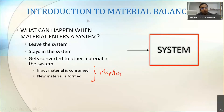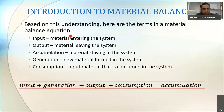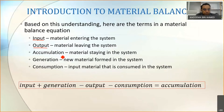For now we are not talking about reaction yet. So you can have: leave, stay, or consume and generate. Based on that, if your material is entering the system you call it input; if your material is leaving the system you call it output; if the material is staying in the system you call it accumulation; if a new material is formed in the system you call it generation.